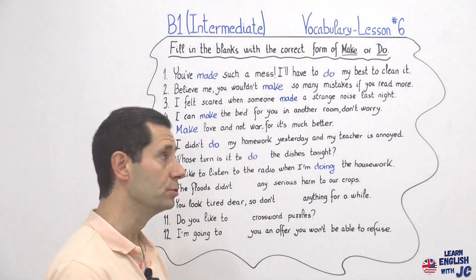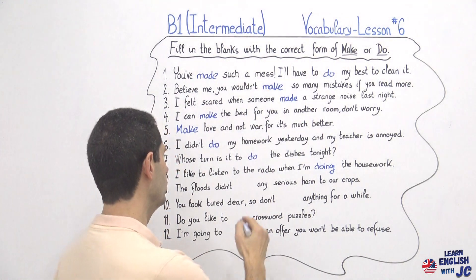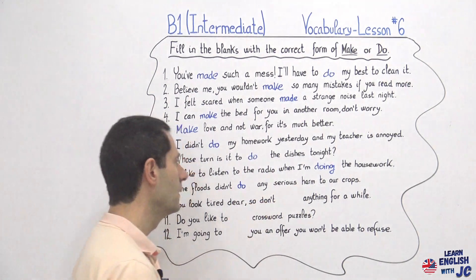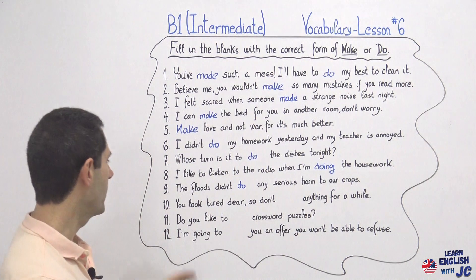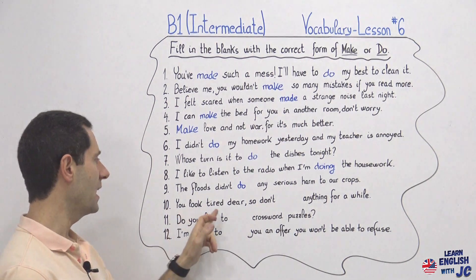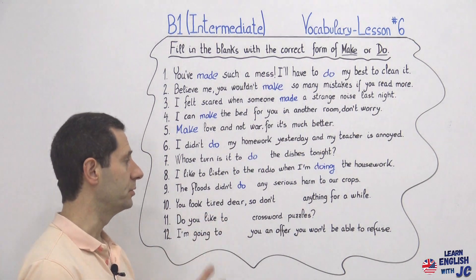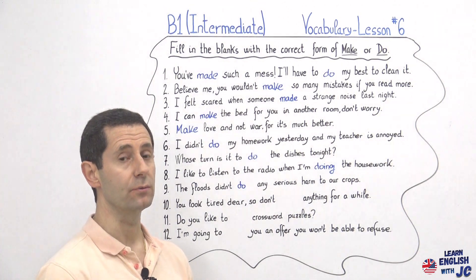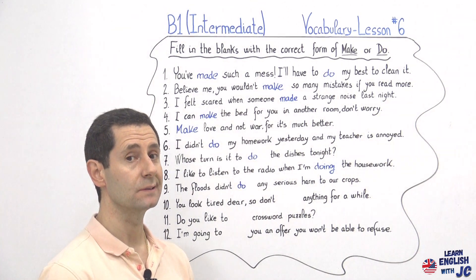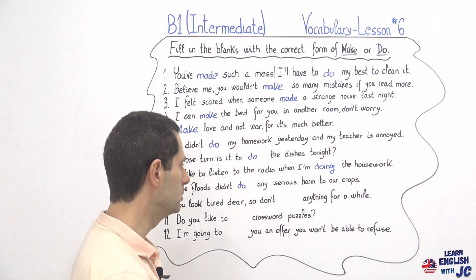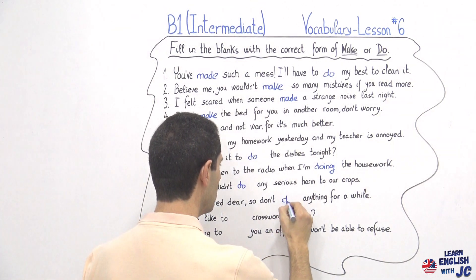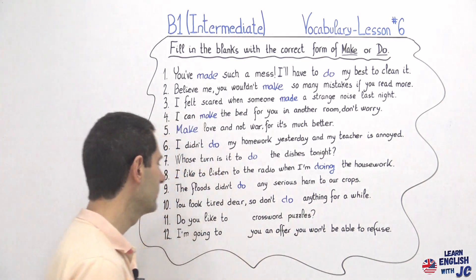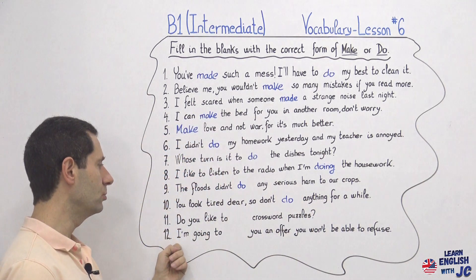Number nine: 'The floods didn't do any serious harm to our crops.' Remember that with 'harm' we use do — 'didn't do any serious harm.' Number ten: 'You look tired, dear — don't do anything for a while, relax.' With 'anything,' we use do — 'don't do anything.'